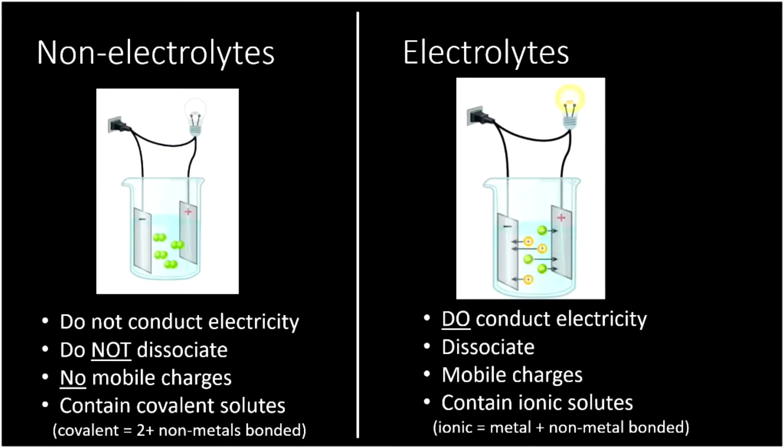Let's summarize the difference between electrolytes and non-electrolytes. Non-electrolytes don't conduct electricity. They don't dissociate and they have no mobile charges. They always contain covalent solutes. And so that means basically that you have two plus non-metals bonded together. Remember the way we identify covalent compounds is that they're two plus non-metals. On the other hand, electrolytes do conduct electricity. They dissociate, that is, split apart in solution. That gives them mobile charges that allow them to conduct electricity. And they contain ionic solutes. So the thing dissolved in them is ionic. And ionic compounds are always a metal and a non-metal.